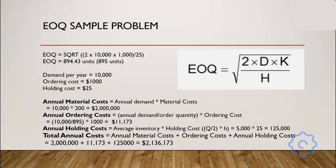Here is the EOQ equation. We start with annual demand D = 10,000, multiplied by the ordering cost K = $1,000, then multiplied by 2. We then divide by the holding cost H = $25 and take the square root. This gives us 894.43 units. Since we don't buy partial units, we always round up to the nearest whole unit, giving us 895 units.